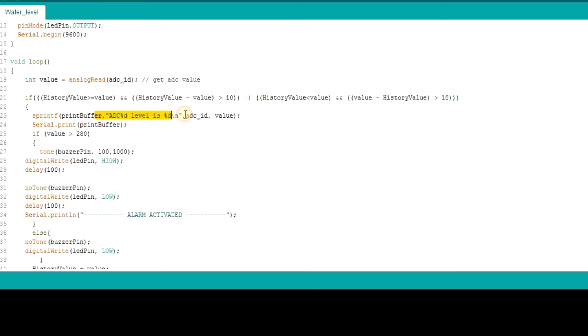Then we'll print it to the serial monitor. And then if the value goes more than 280, what we'll do is we'll put on the alarm. That is, if the water, if you use it in your house and then the water is more than a certain level, you can put the alarm on. Else the alarm will be down and the LEDs will be down.